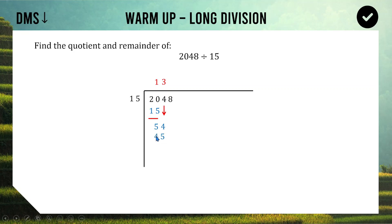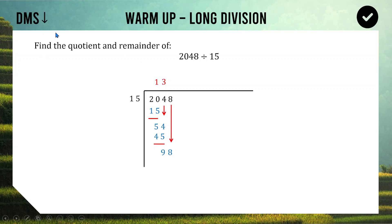We write 45 underneath. Next step is S for Subtract: we draw a line, do 54 take away 45, and get an answer of 9. And now once again we drop the next digit — the 8 comes down to join the 9 and becomes 98.